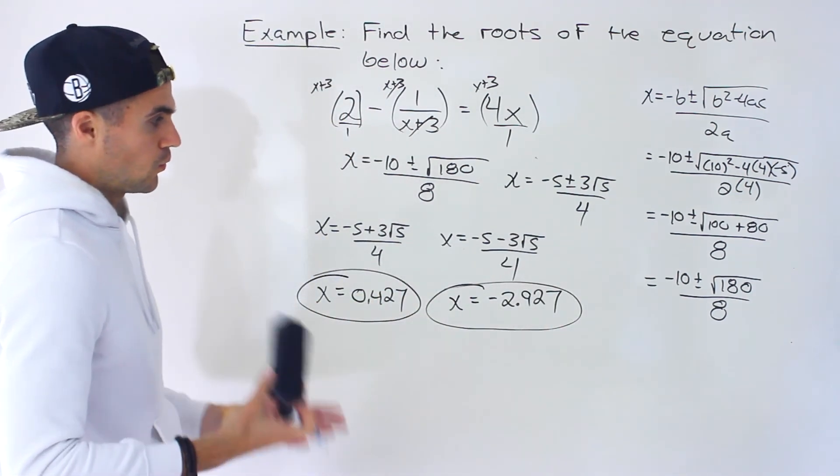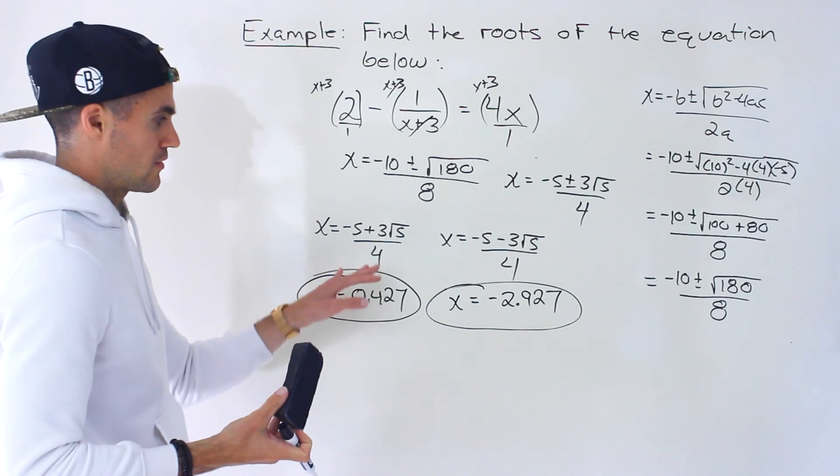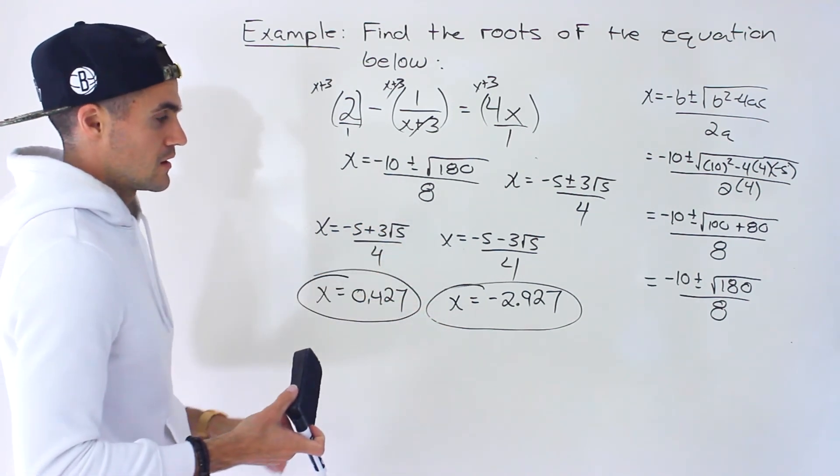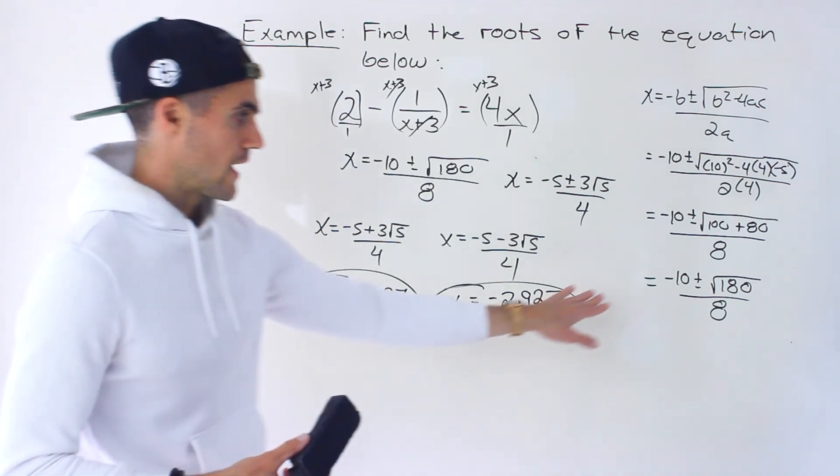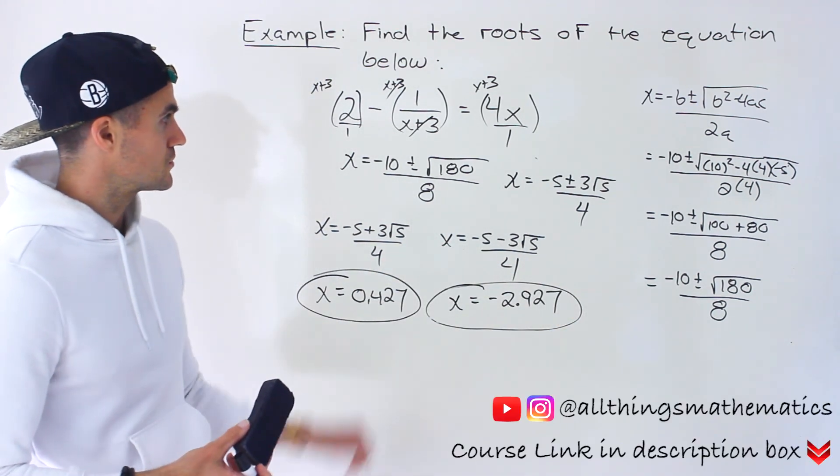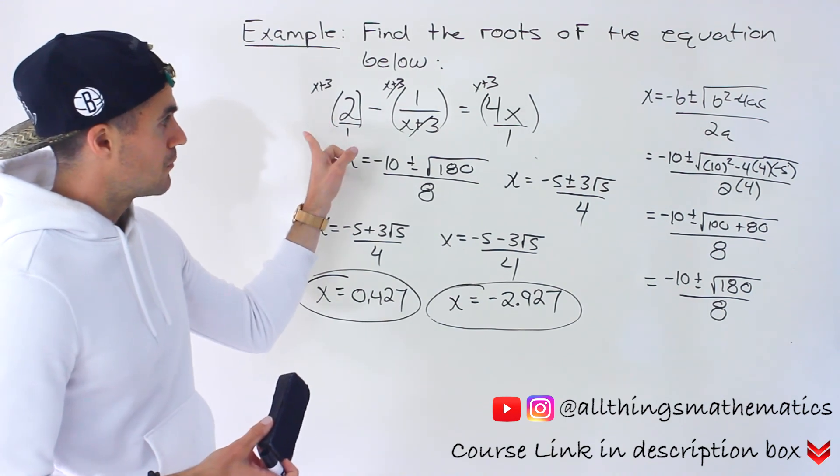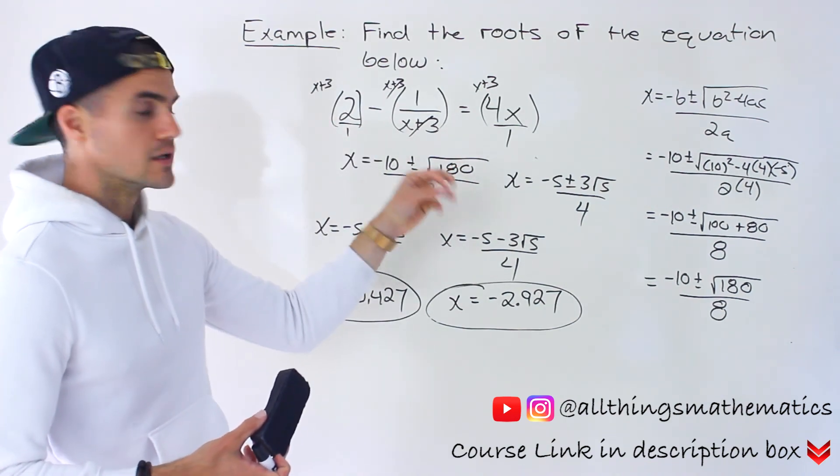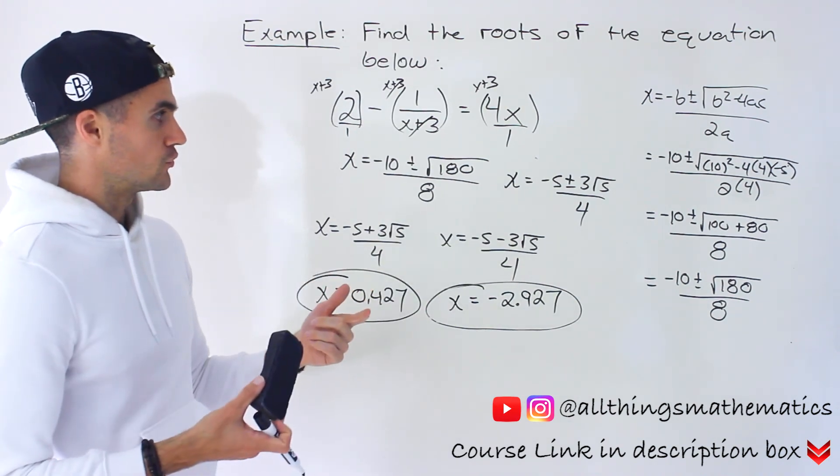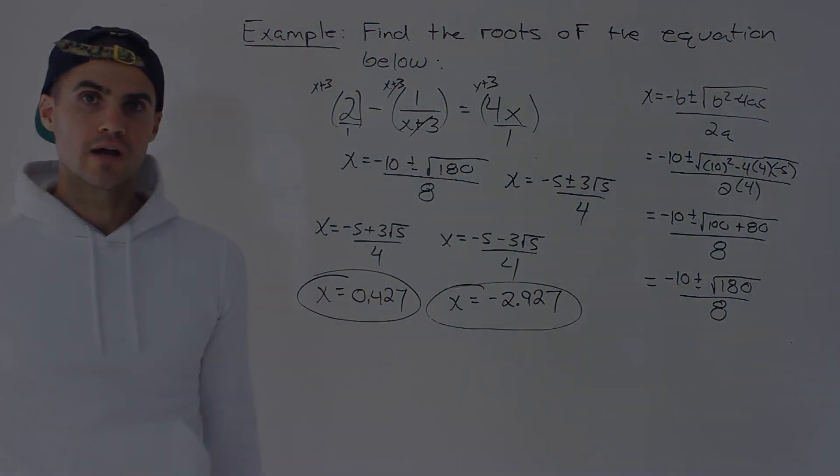So whichever way your teacher wants it in whatever format, whether they accept decimals, if they don't they want you to simplify the radical expressions as exact values. Those would be the solution. So with something like this you want to multiply it by the lowest common denominator. Multiply everything on the left side and right side. And then it will turn into just a regular quadratic equation.